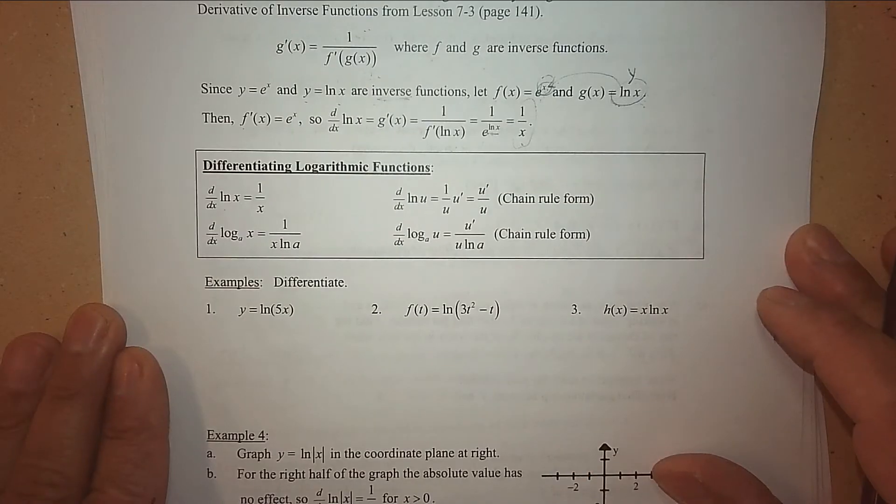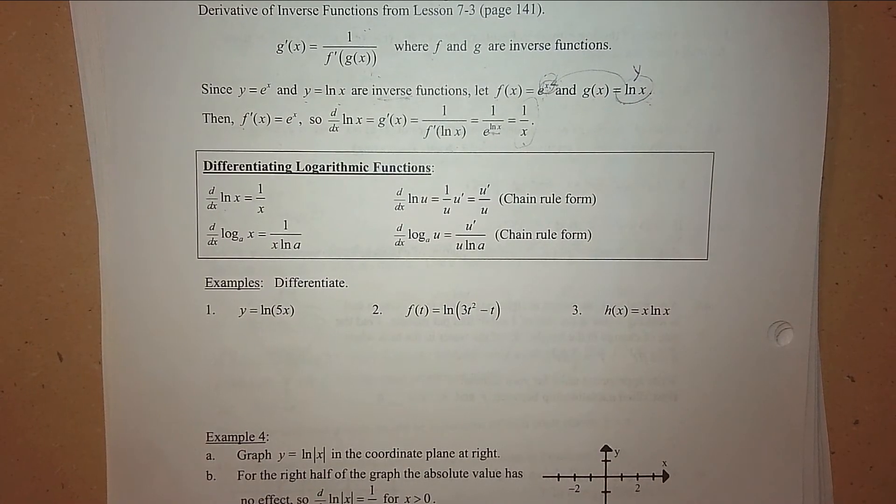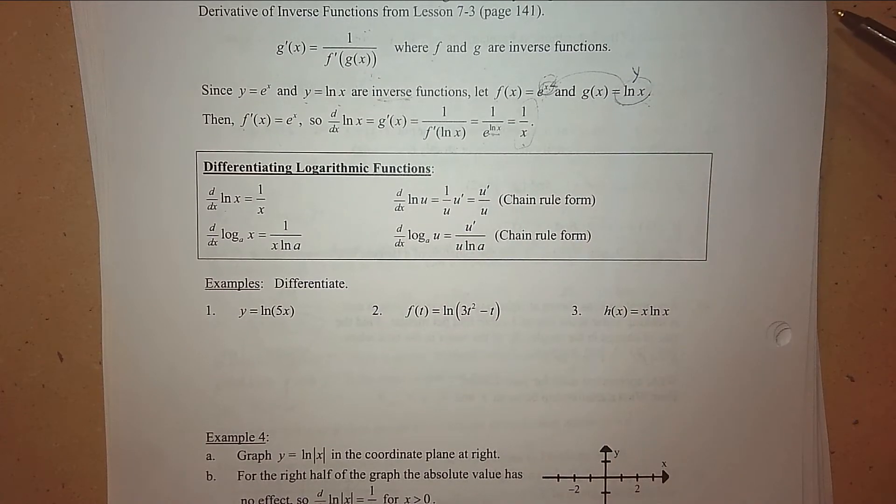When you take the derivative of ln(x), the answer is 1 over x. It was a long journey to tell you, but it was the connection of inverses in the derivative. Now, if you have a hook involved, then it's 1 over x times whatever that hook is. Because these deal with fractions, the hook is going to be in the numerator.